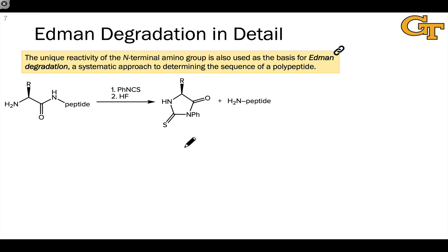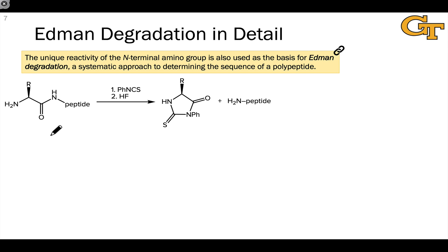The analysis on the last slide gave us the basic idea that the Edman degradation generates a heterocycle involving only the N-terminus that can be analyzed to determine the N-terminus, and repetitively applied to determine the sequence of a polypeptide. Here I wanted to look at this reaction in a little more mechanistic detail. We won't go through the individual elementary steps, but we'll look at some key intermediates.